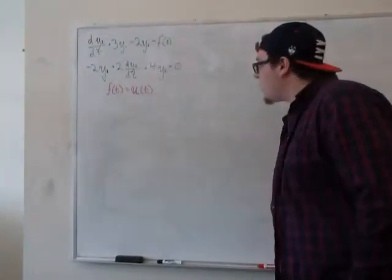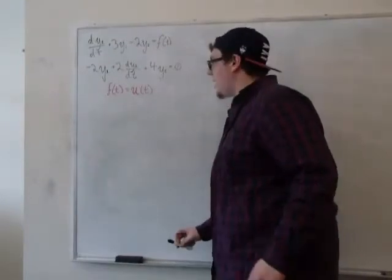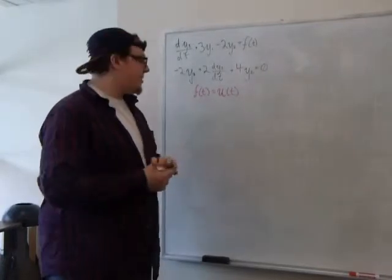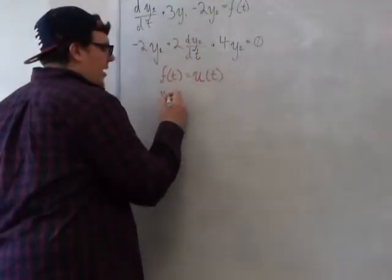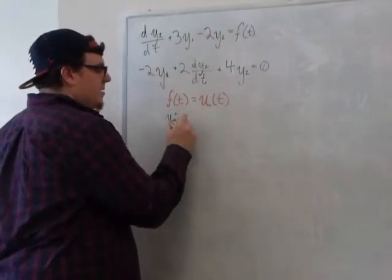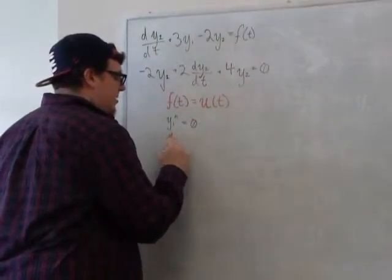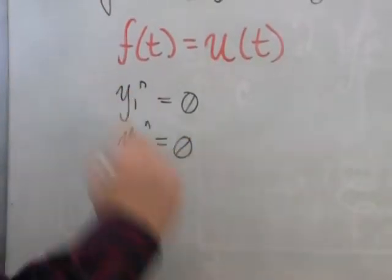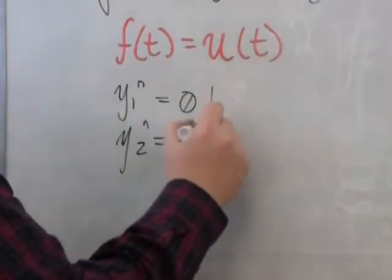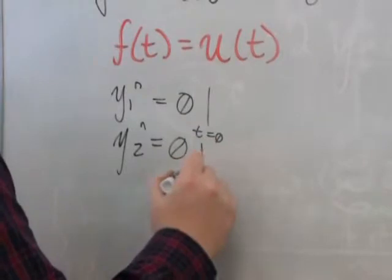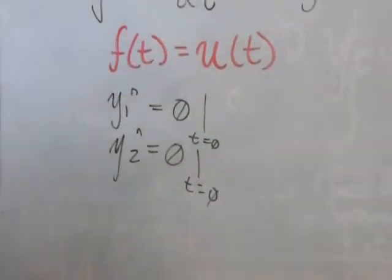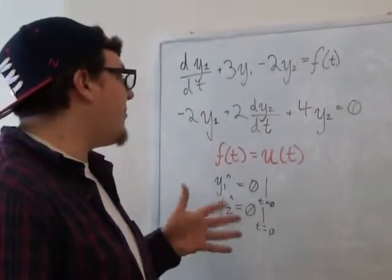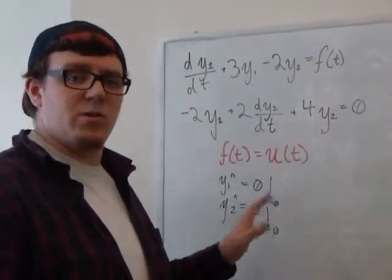So we're going to start with solving these for the unit step function using Laplace transforms. We're going to assume zero initial conditions. That means that y1 or all of its derivatives are zero, and y2's all of its derivatives are zero at time zero. And that makes taking our Laplace transforms a lot easier. Often times you won't be able to say this, but for all linear time invariant systems this will generally be true.